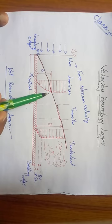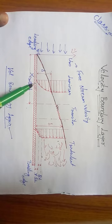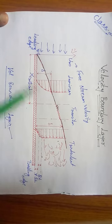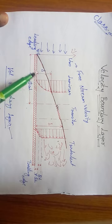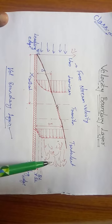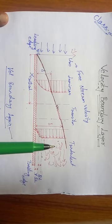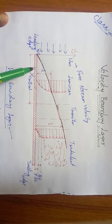Later, velocity goes on increasing. As inertial force increases, the Reynolds number increases, and we get a flow transition from laminar to transition state, and from transition to turbulent. It all depends on velocity, which in turn depends on the Reynolds number.